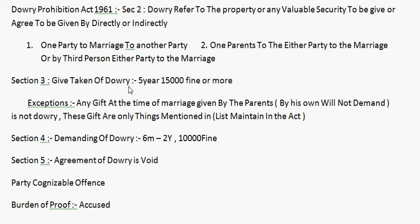For example, if a father gives his child a car at the time of marriage, that is a gift. But what is the difference between a gift and dowry? If those gifts are given within the limits maintained in this act, they are gifts — otherwise they fall under dowry. I hope you understand.